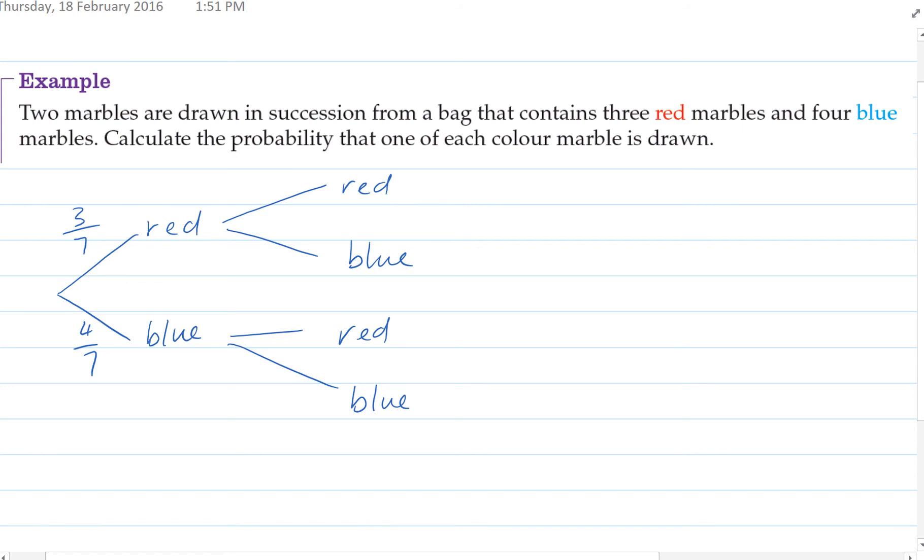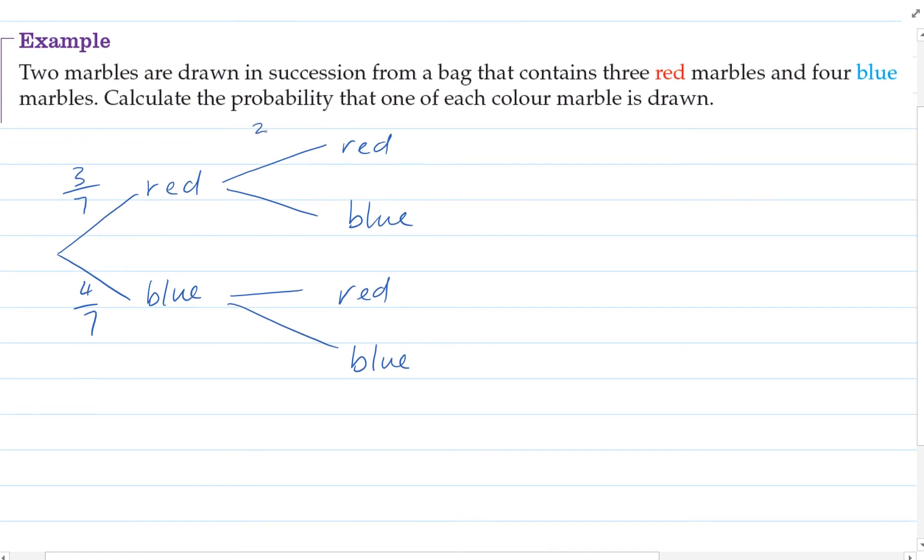But the probabilities change because if we take a red out, there's only two red remaining out of a total of six. But there would be four blue remaining out of a total of six. And if we take a blue out, then there would still be three red remaining out of six. But there would only be three out of six red.